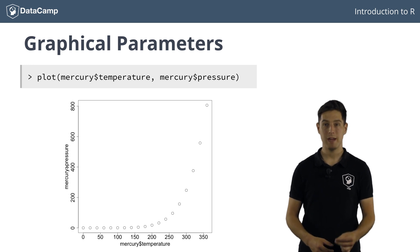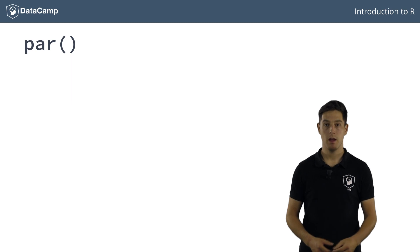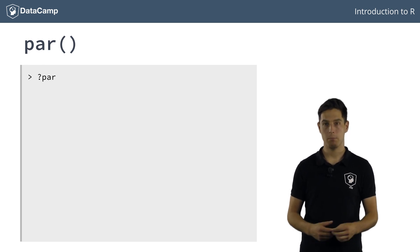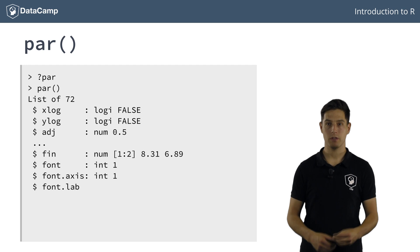You can also inspect and control these same graphical parameters with the par function. Typing question mark par opens up its documentation, with information on all the parameters that you can specify. Simply calling par gives you the actual values of these parameters.